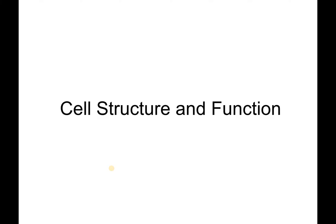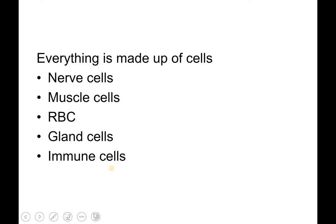In the next several sections, we're going to look at the cell. Everything is made up of cells. Go back to what we talked about with atoms and molecules making up organelles, and organelles make up cells. Enough cells put together make up tissue, enough tissue makes up an organ, enough organs put together is an organ system, and then eventually the organism.